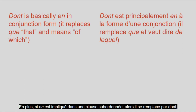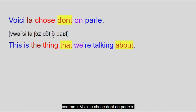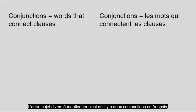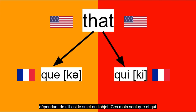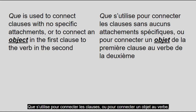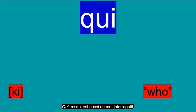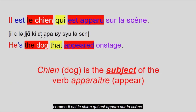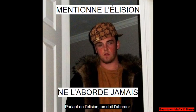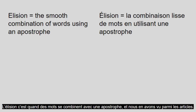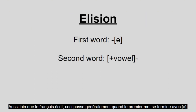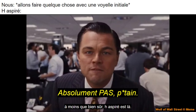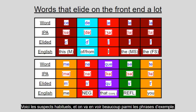Another miscellaneous topic: the conjunction 'that' has two words in French depending on subject versus object. Those words are que and qui. Que is used when either connecting clauses or when connecting an object to the verb, such as voici le cadeau qu'elle m'a donné. Qui, which is also the word for 'who,' is used when connecting a subject to a verb, like il est le chien qui est apparu sur la scène. Qui doesn't elide, by the way. Speaking of elision, we should address it. Elision is when words combine with an apostrophe, and we saw some of it in the articles. As far as written French goes, this generally happens when the first word ends with E and the second word begins with a vowel, unless of course H aspiré is there.